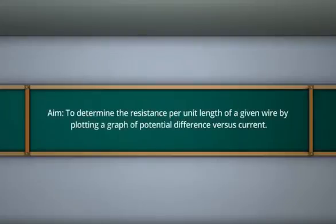The aim is to determine the resistance per unit length of a given wire by plotting a graph of potential difference versus current.